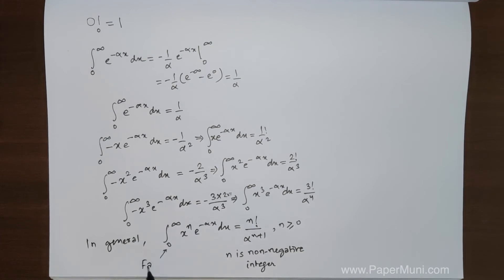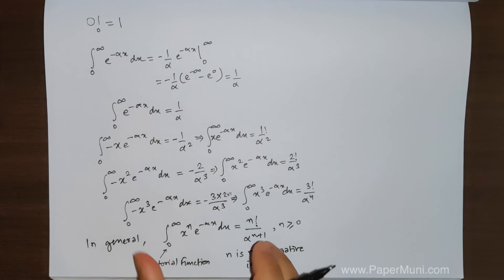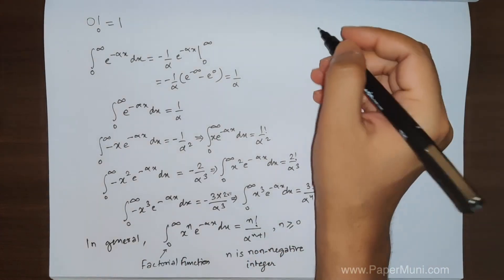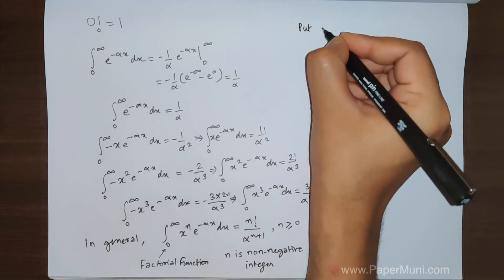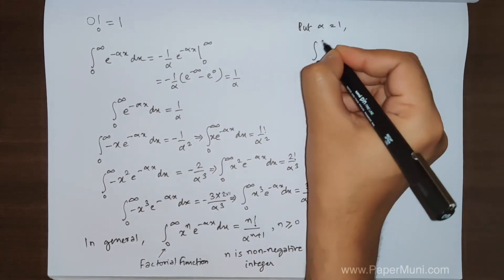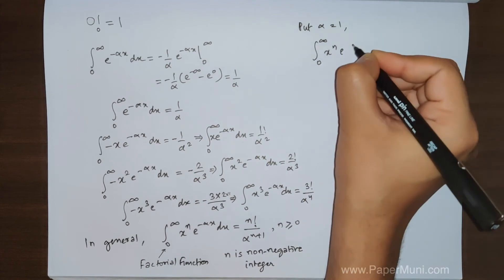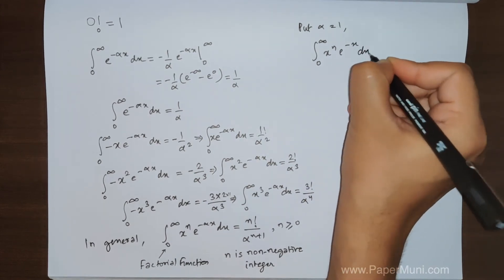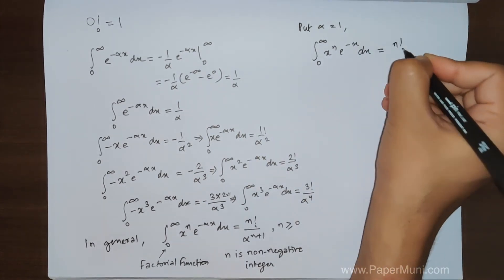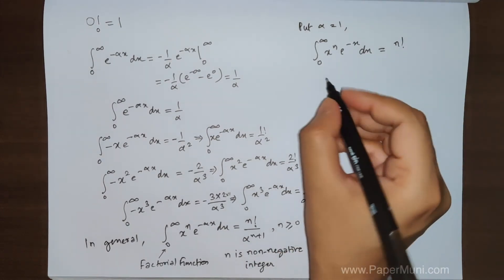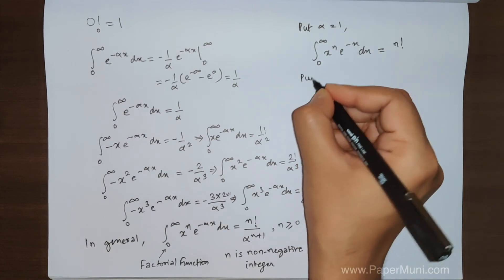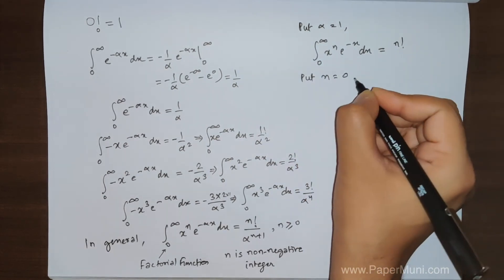Now, using this factorial function relation, if we put alpha equal to 1, we get the integral from 0 to infinity of x to the power n times e to the power minus x dx equals n factorial, since 1 to the power n plus 1 equals 1.